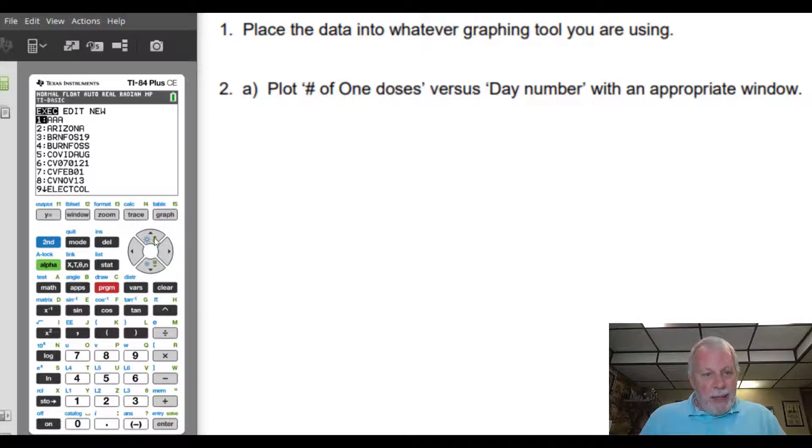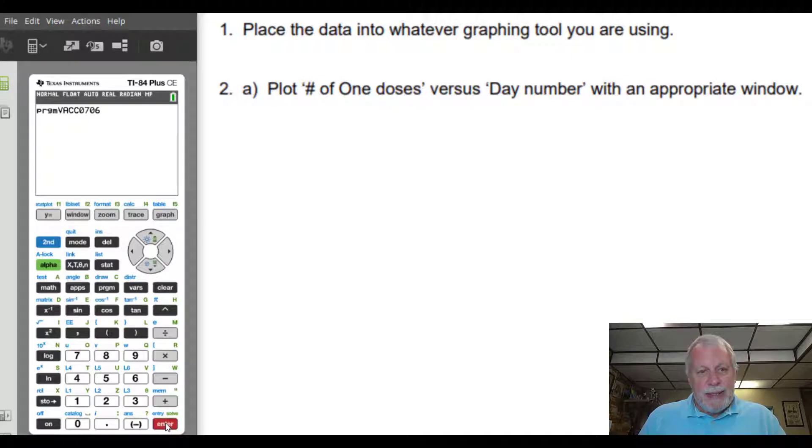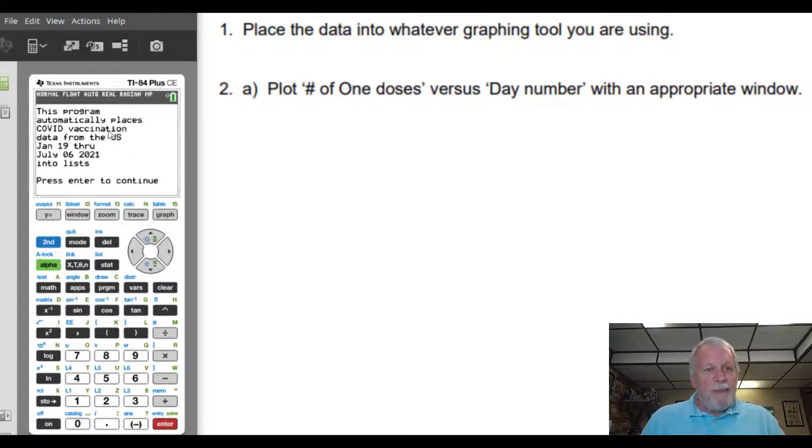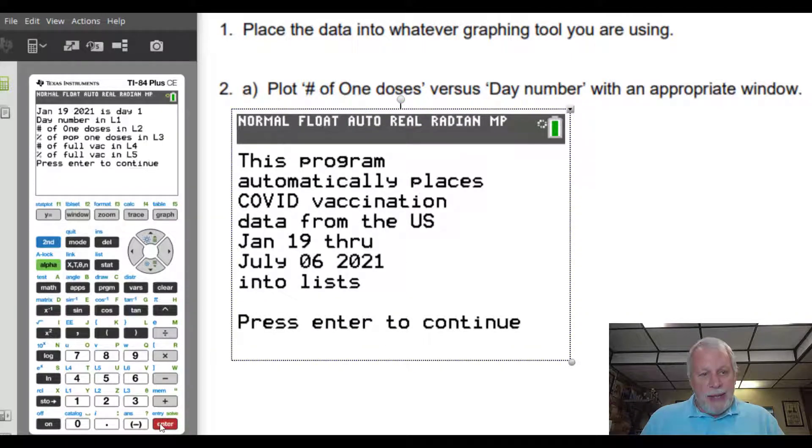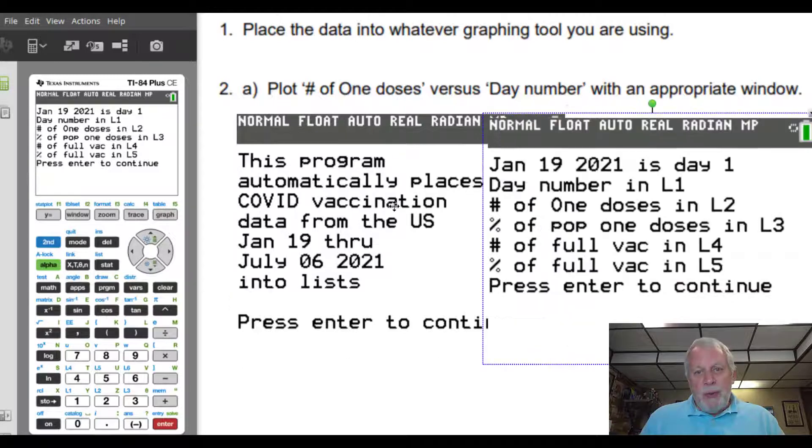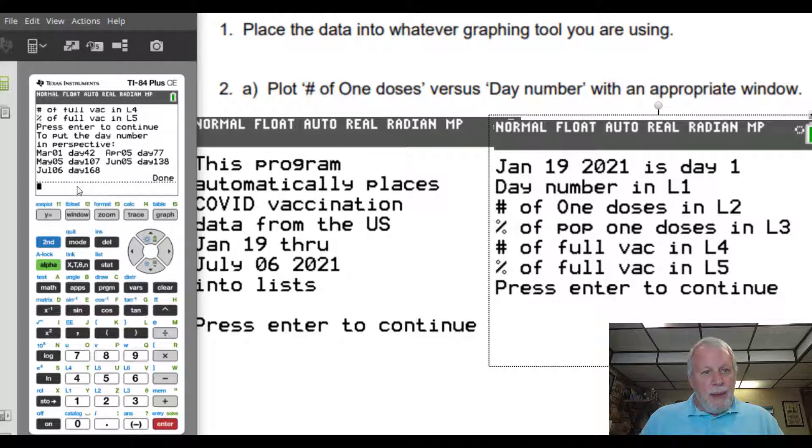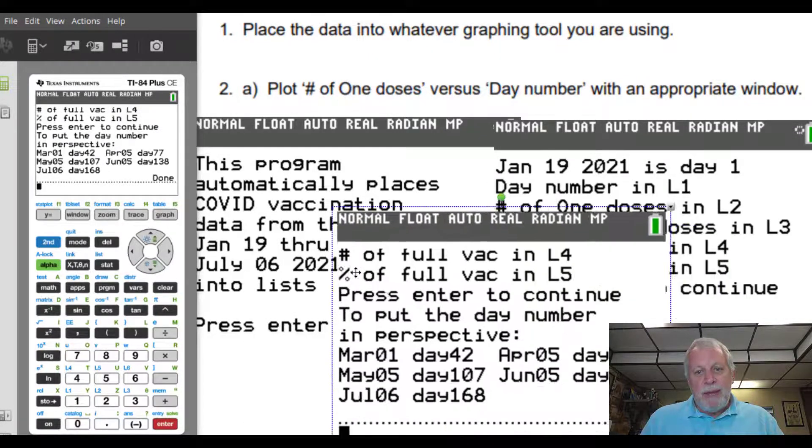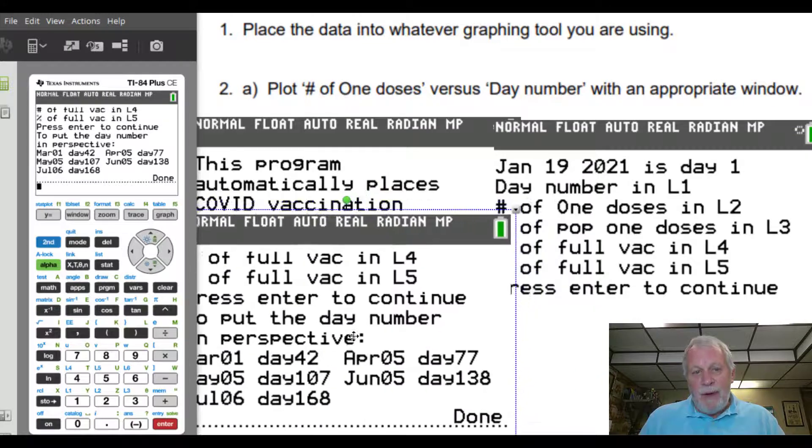Now, since you can't be doing this with me, I'm going kind of quickly. I will tell you that the teacher notes and solutions have screenshots, explanations of exactly how I'm doing this so that you can help your students. But it's more about the mathematics than the technology. The technology just helps us do the calculations. So to get that data into the calculator, I created a program. This one is called Vaccination 0706, VACC 0706, because that's the date that the data goes up to, July 6th. I'm going to go ahead and run that program. It says it automatically places the data into lists. Press enter to continue. It tells you what list has what data.